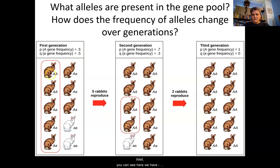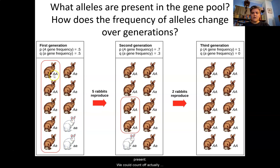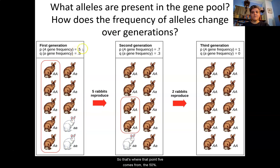What does that mean? Every rabbit has two alleles, and there are ten rabbits total, meaning there are 20 alleles present. Counting the recessive little-a alleles: one, two, three, four, five, six, seven, eight, nine, ten — ten out of 20 is half. That means the other half is the dominant A. That's where the 0.5 comes from — it's 50%.